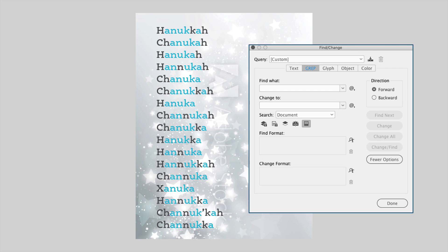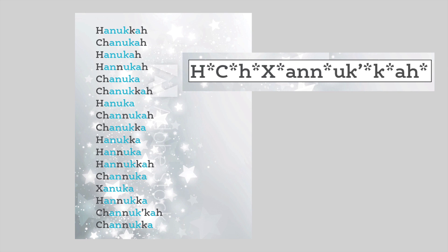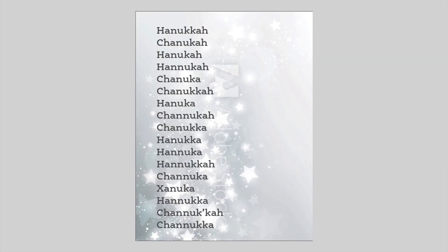Back in the Find/Change dialog box, in the Find What field, we start with a capital H — which may or may not be there — so we add an asterisk right after it. The next character might be a capital C followed by an asterisk; again, may or may not be there. There are a few more like that: an H and an X. Then it's followed by A and N, which are there every time, so they don't need the asterisk. You go through each letter in order, putting an asterisk if it may or may not be there, and when you put it all together it looks like this.